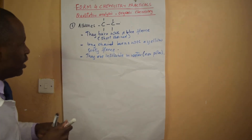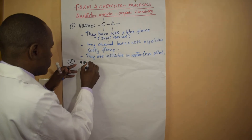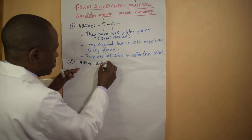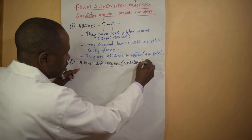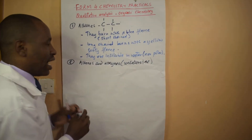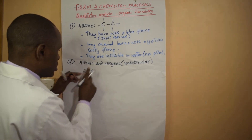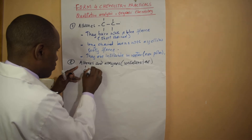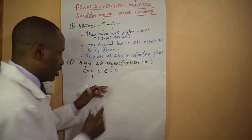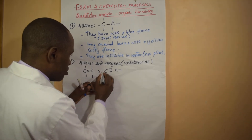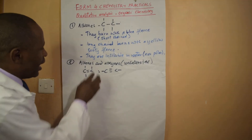Now let's look at the alkenes and alkynes. These are unsaturated. The alkenes are represented with a carbon-carbon double bond (C=C), while the alkynes are represented with a carbon-carbon triple bond (C≡C), with single bonds on either side.